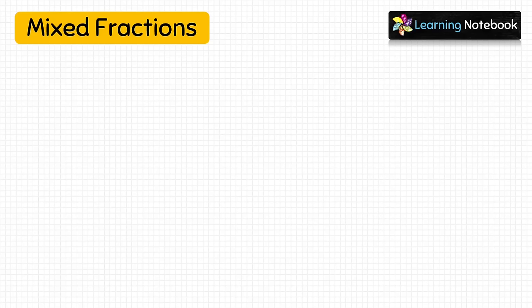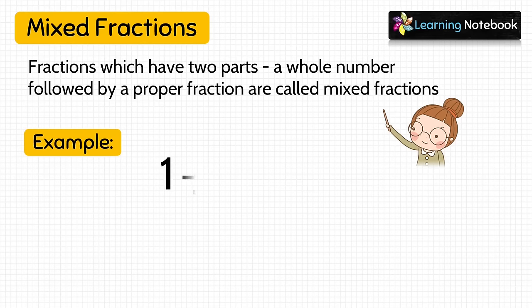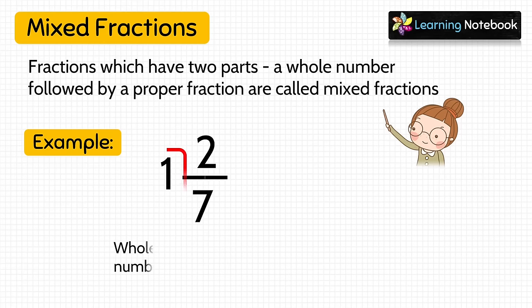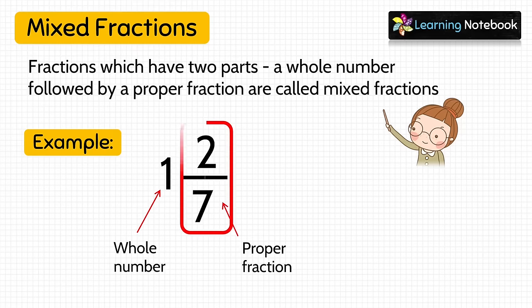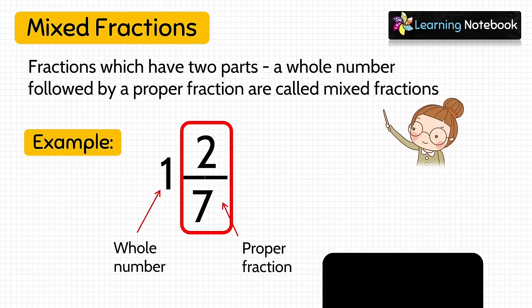Now let's understand what mixed fractions are. Fractions which have two parts — a whole number followed by a proper fraction — are called mixed fractions. For example, 1 and 2 by 7: here 1 is the whole number and 2 by 7 is a proper fraction. So 1 and 2 by 7 is a mixed fraction because it has two parts, a whole number and a proper fraction.